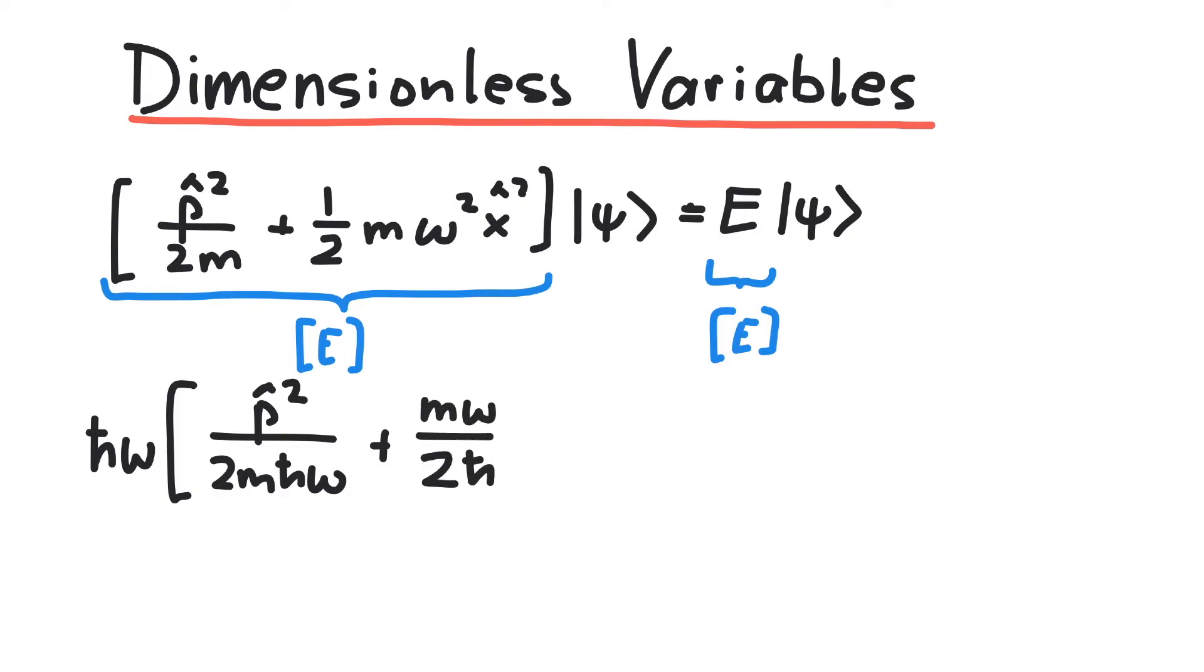This means, inside the brackets, we do not have units anymore, because if we multiply h-bar omega times everything in brackets, it should yield energy again.